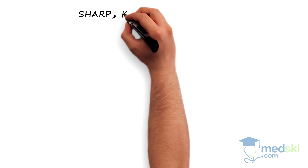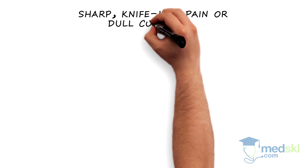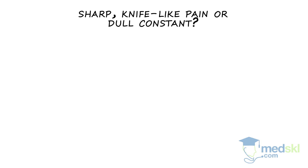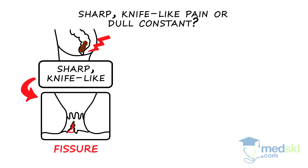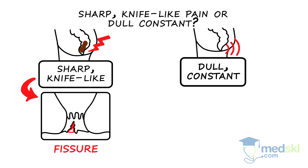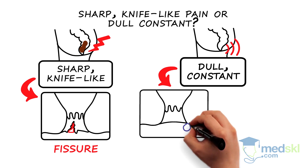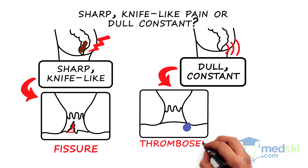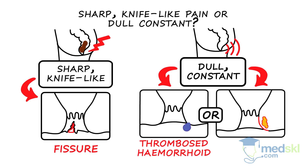Is it a sharp, knife-like pain or a dull, constant pain? A sharp, knife-like pain with bowel movements suggests an anal fissure, while a dull, constant pain not associated with bowel movements suggests a thrombosed hemorrhoid or anorectal abscess.